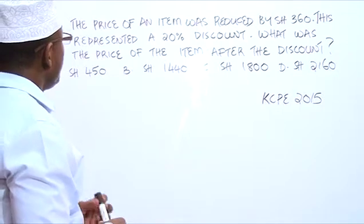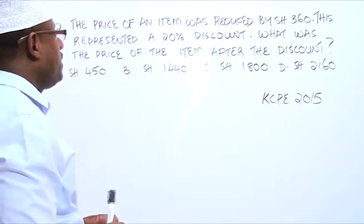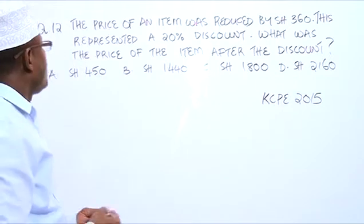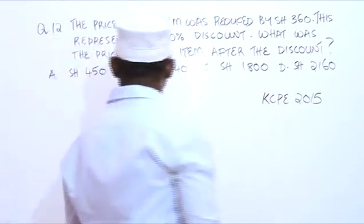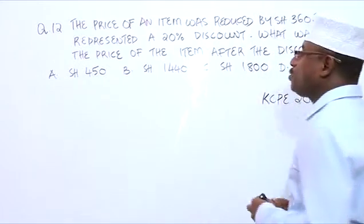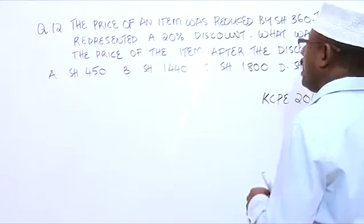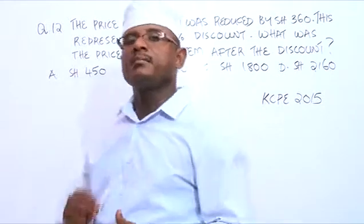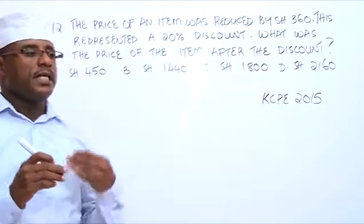The price of an item was reduced by 360. This represented a 20% discount. What was the price of the item after the discount?